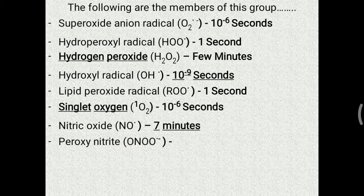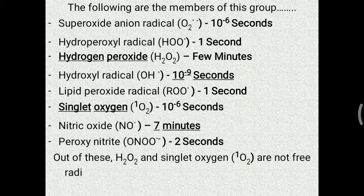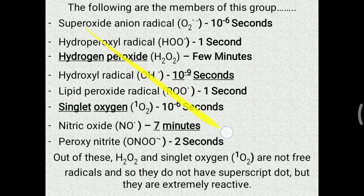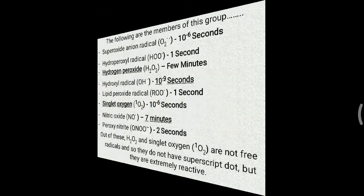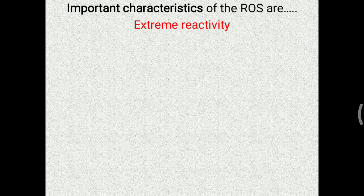Lipid peroxide radical is generated from fatty acids and is an important free radical. Nitric oxide has a seven-minute half-life; peroxynitrite has a two-second half-life — these are called reactive nitrogen species. H2O2 and singlet oxygen are not technically free radicals and do not have a superscript dot, but they are extremely reactive and are included in the group.